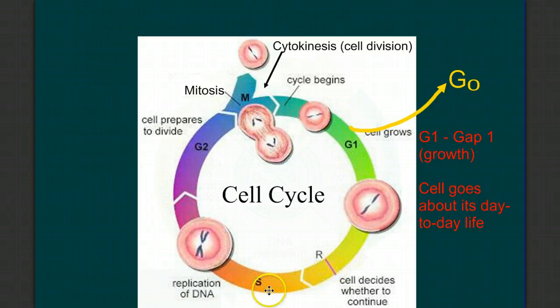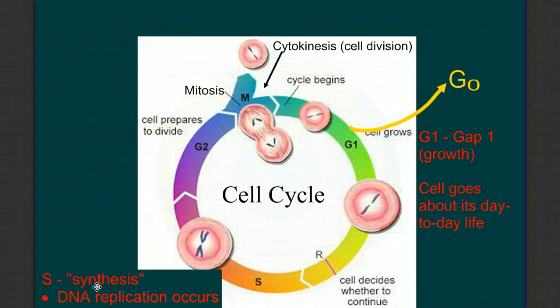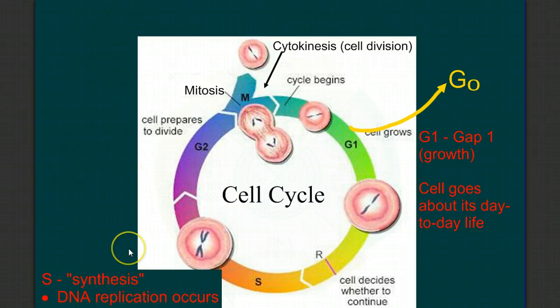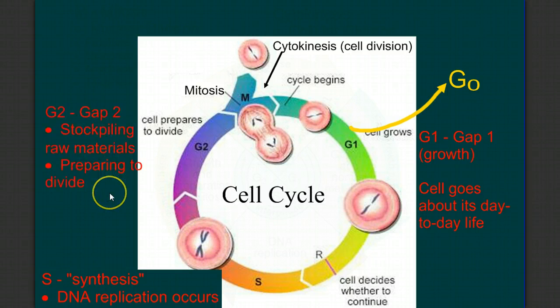And they enter into what we call the S phase. S stands for synthesis. It's during the S stage when DNA replication occurs. In this video, we're just going to say DNA replication occurs, but for a more detailed discussion on how DNA replication occurs, click on the link here and it'll take you to a video on DNA replication. But after we replicate our DNA and double the amount of genetic material, it's time for G2, or gap 2. This is a time when a cell starts stockpiling raw materials in preparation for division.